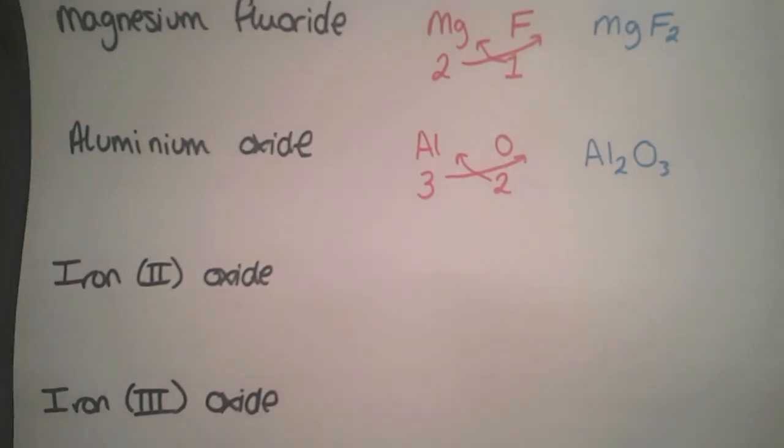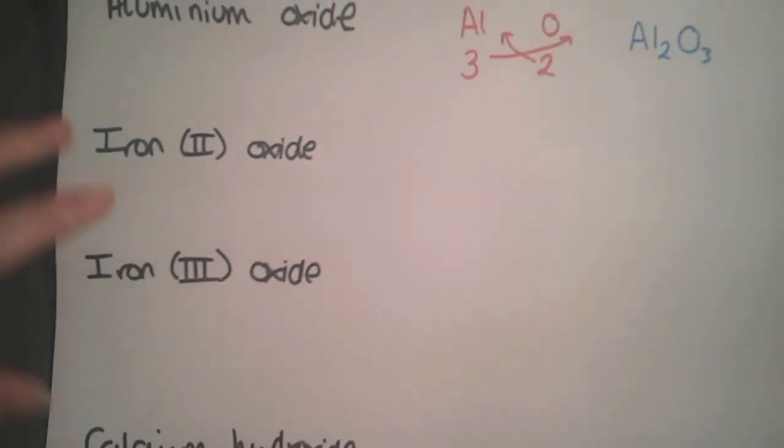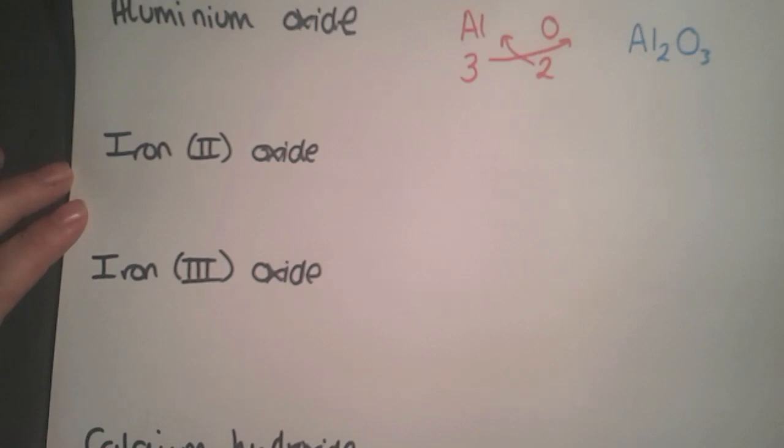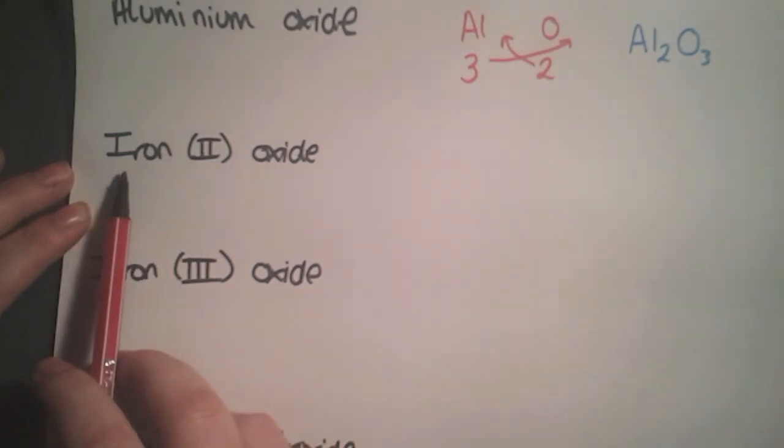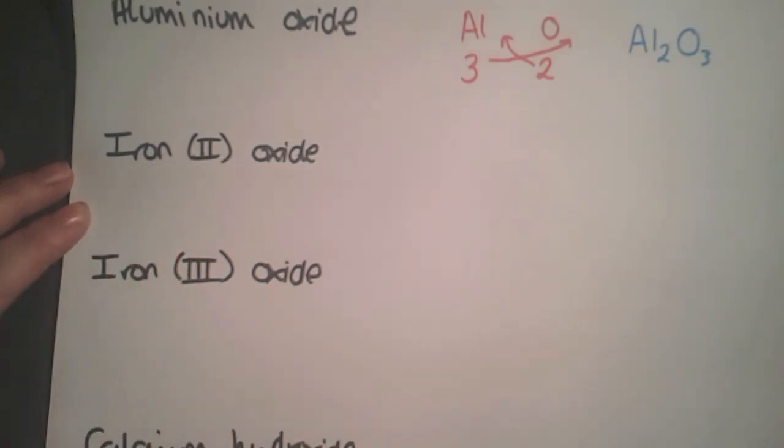The next two examples use transition metals. In your data book, you'll find metals within their groups with group numbers at the top. However, transition metals don't have group numbers, making it trickier to work out valency. To help you, the valency is put in brackets after the metal's name using Roman numerals.